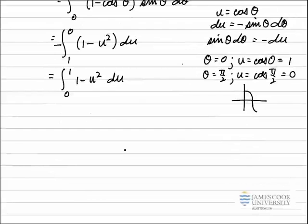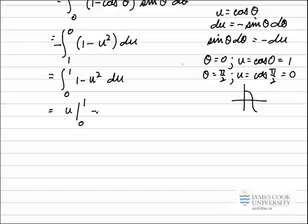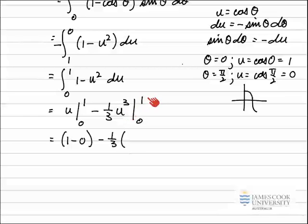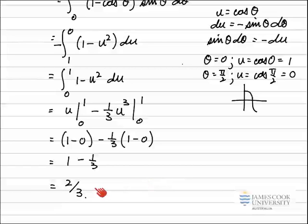That gives a standard integral which I can evaluate with my limits for u. The integral of one is just u, evaluated from zero to one, minus the integral of u squared which is one third u cubed, also evaluated from zero to one. Putting in the top limit minus the bottom limit: for the second term, take the negative one third outside, substitute one in to get one cubed minus zero cubed, which is just one minus zero. Rearranging, that gives one minus one third, and the answer for this integral is two thirds. So the value of this definite integral is two thirds.